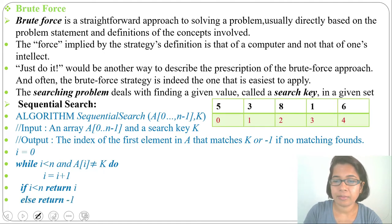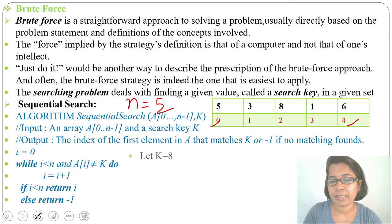Let's take an example. This is an array. Let n equals to 5 means it contains 5 values and these are the index. Index starts from 0 till n minus 1. n is 5, so last index is 4. We need to take one key. Let key equals to 8. We have array and key. All inputs are given.